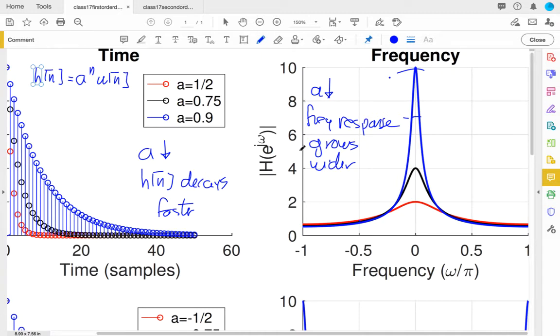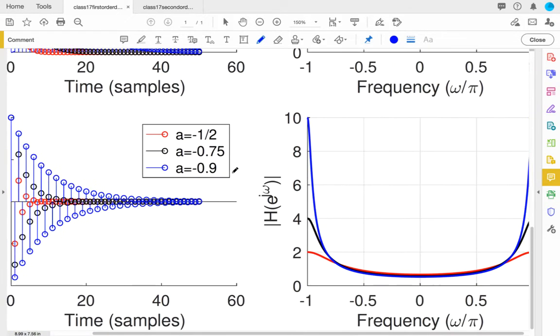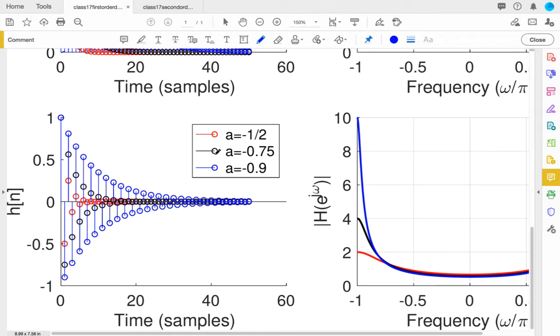I mentioned in the earlier video what happens at negative values of A is important, too. If I look in the bottom row, these are all negative values of A. So now I have minus 1/2, minus 3/4, and minus 0.9. And we see the kind of behavior we expect from exponentials with negative signs is that they alternate. They hop up in positive, negative, positive, negative.